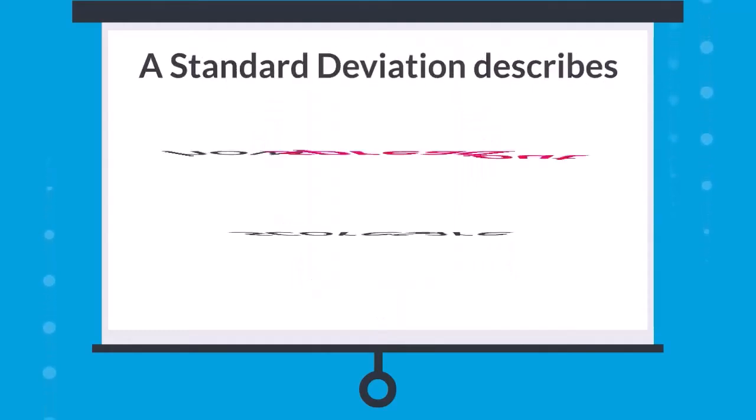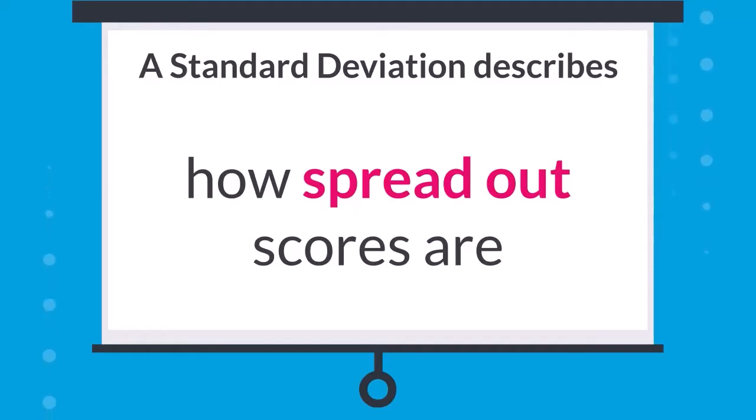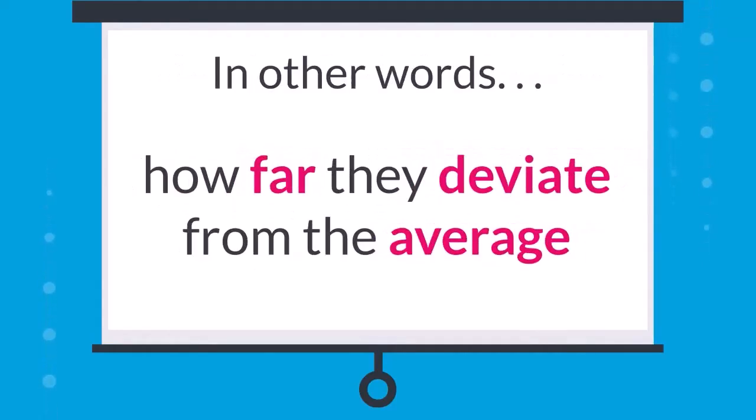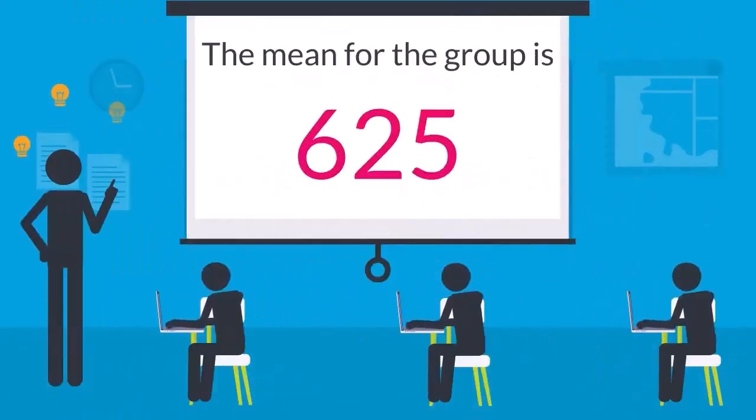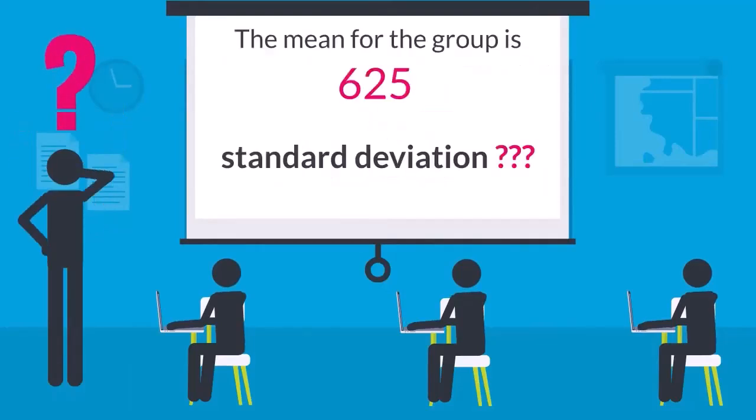A standard deviation describes how spread out scores are. In other words, how far they deviate from the average. Mean scores are very helpful to get a sense of how a group is doing. But when score reports include mean scores without standard deviation, it's hard to see just how spread out the scores are.